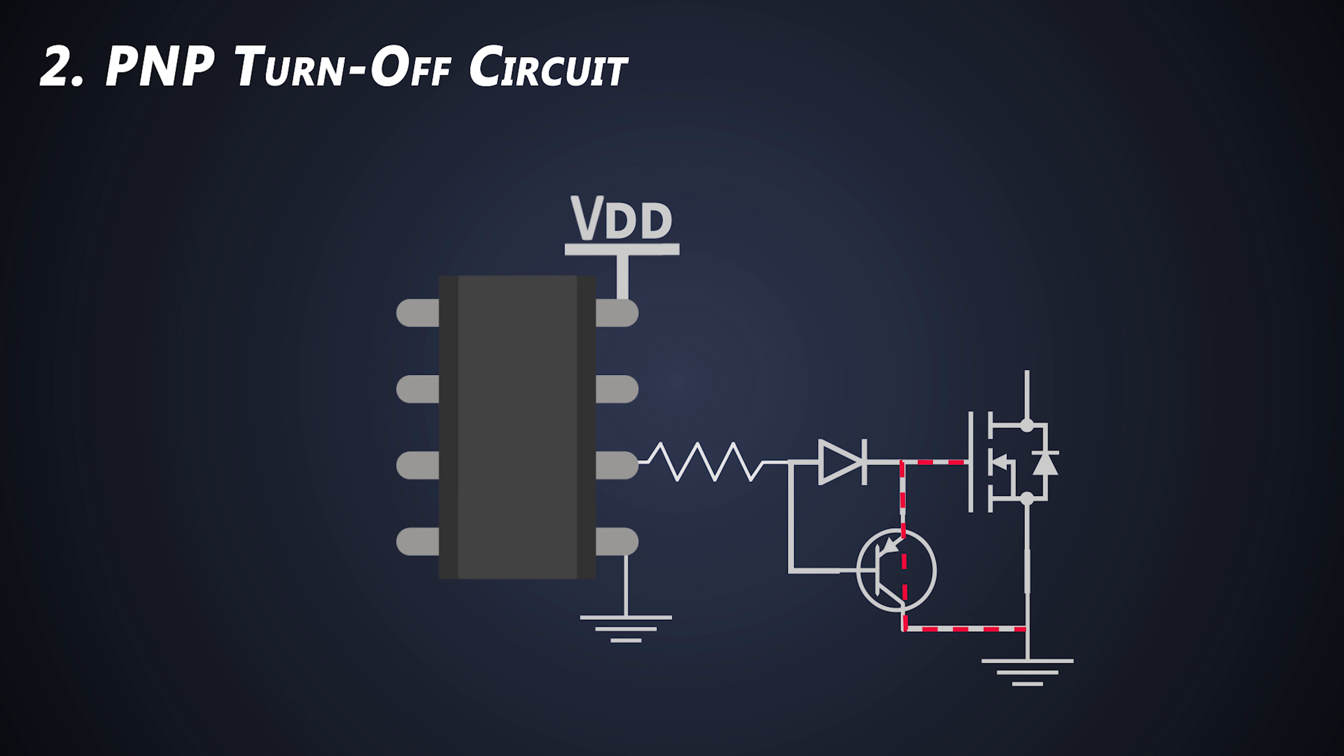Also, the turn off current does not go back to the driver. It does not cause ground bounce problems and power dissipation of the driver is reduced substantially. The turn off transistor shunts out the gate drive loop inductance and output impedance of the driver. Furthermore, this BJT never saturates, which is important to be able to turn it on and off quickly.